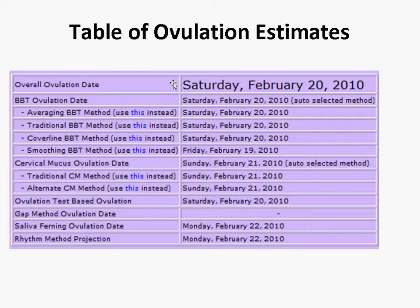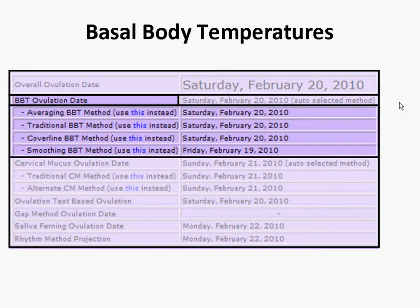The difference with MyFertilityCharts.com is we also give you information about the different symptoms and the different ovulation dates that have been predicted using different techniques. Let's take a look at an example, specifically basal body temperatures. Basal body temperatures uses four different analysis techniques to produce up to four different ovulation date estimates: the averaging, traditional, cover line, and smoothing methods.